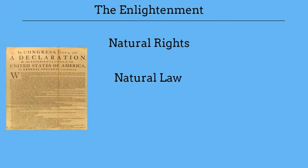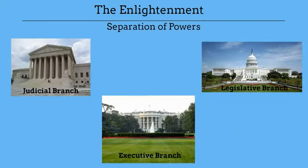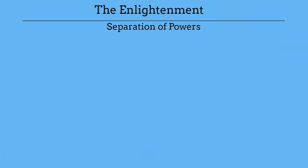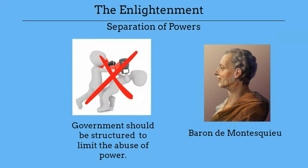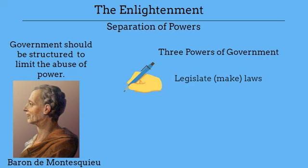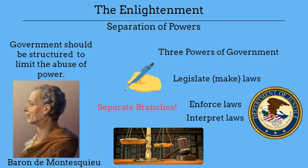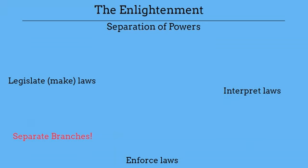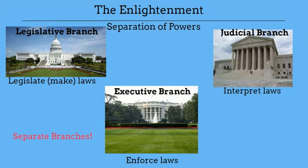Beyond natural rights and the social contract, there's another big Enlightenment idea that influenced the Founding Fathers: separation of powers. This idea comes from the French Enlightenment thinker the Baron de Montesquieu. Montesquieu felt that government should be set up so that no one is afraid of anyone else, meaning government should be structured to limit the abuse of power. Specifically, he identified three powers of government: the power to legislate or make laws, the power to enforce laws, and the power to judge laws. He said they should be separated into three different branches to avoid abuse of power by any one branch.